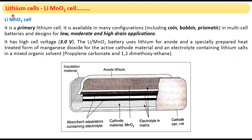Lithium batteries are available in two forms: primary lithium batteries and secondary lithium batteries. Some lithium batteries use lithium in metallic form, and most lithium batteries use lithium in ionic form — the Li+ form. Now I am going to talk about the lithium-manganese dioxide cell, the Li-MnO₂ cell, which is a primary battery.